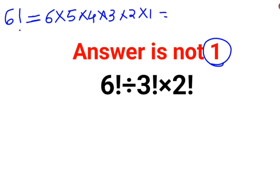So 6! comes out to be 6 multiplied by 5 multiplied by 4 multiplied by 3. The entire answer is 720. Similarly, 3! will be 3 multiplied by 2 multiplied by 1, so the answer is 6. And 2! will be 2 multiplied by 1, so the answer is 2.